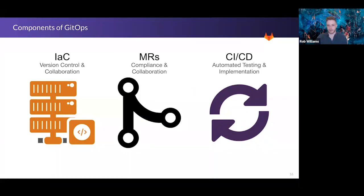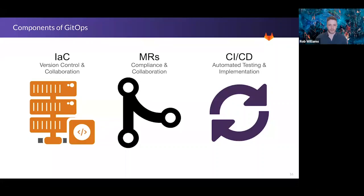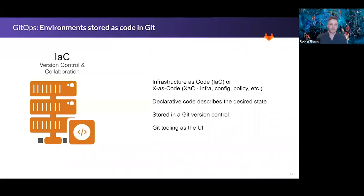The three core components are: infrastructure as code — storing infrastructure as code in your Git repository and source code management; merge requests — the change agents and audit trail of when, where, and what changed; and CI/CD — the automation, reconciliation loop, and how we ensure infrastructure is kept up to date with our source of truth at any given time.